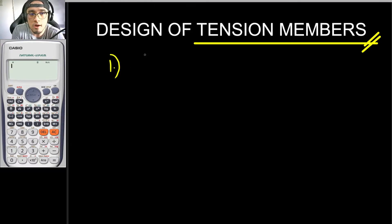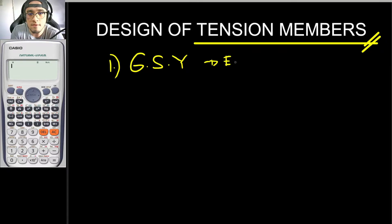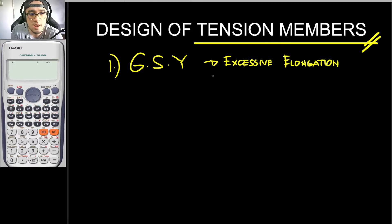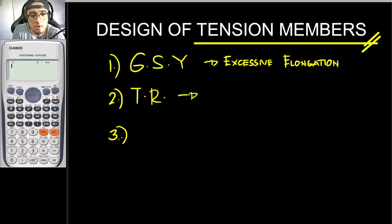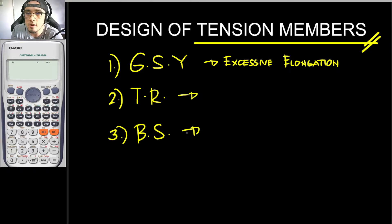The first one is what we call gross sectional yielding, abbreviated as GSY. Gross sectional yielding is basically excessive elongation. The second one is tensile rupture, abbreviated as TR — in this case the member has already ruptured, meaning it has reached its ultimate stress. And aside from that, there is block shear, which is the combination of shear stress and tensile stress.